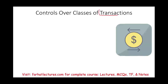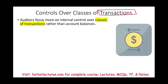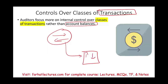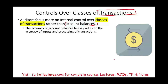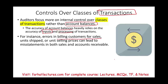The auditor will focus mainly on control over classes of transactions rather than account balances. A transaction is when you buy or sell something; an account balance is the balance at the end of the period. Because of transactions, you have the balance. We want to see if transactions are conducted properly — if transactions are properly recorded, the balance should be proper. The accuracy of the balance heavily relies on the accuracy of the inputs and processing of transactions. If your input is correct, your output should be correct.